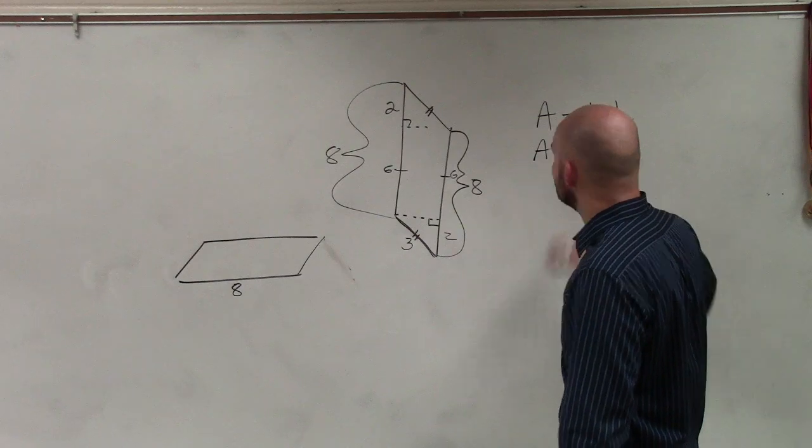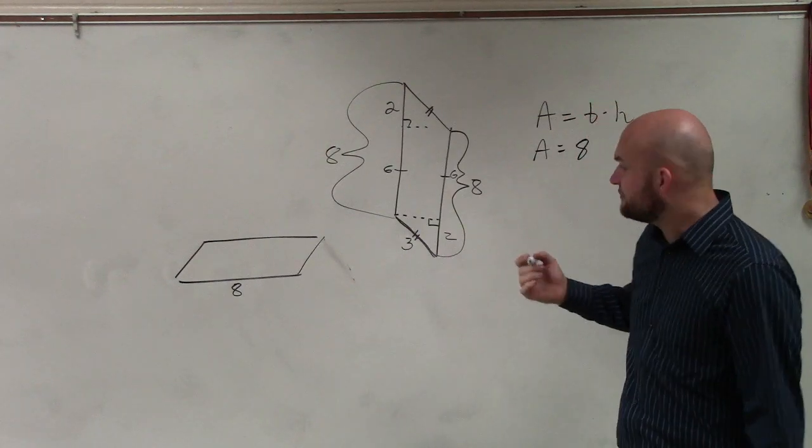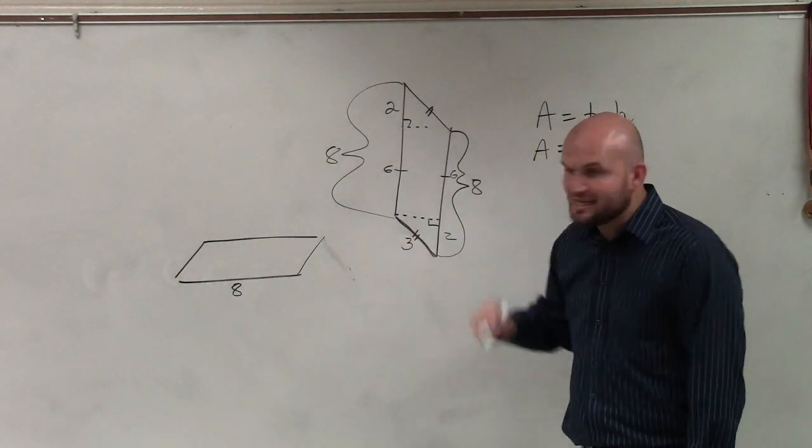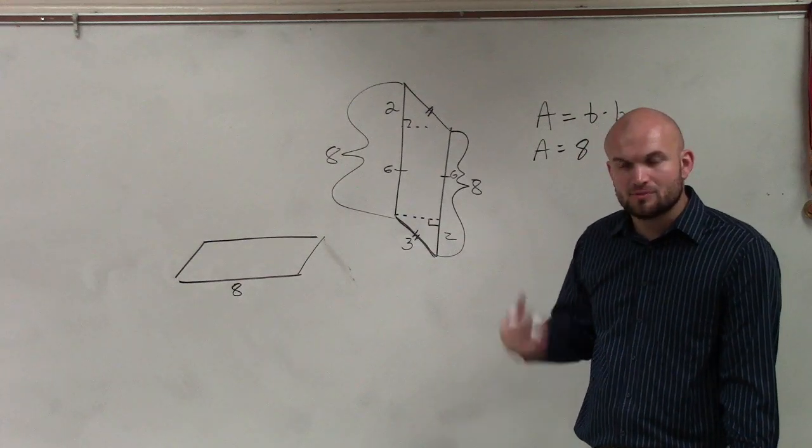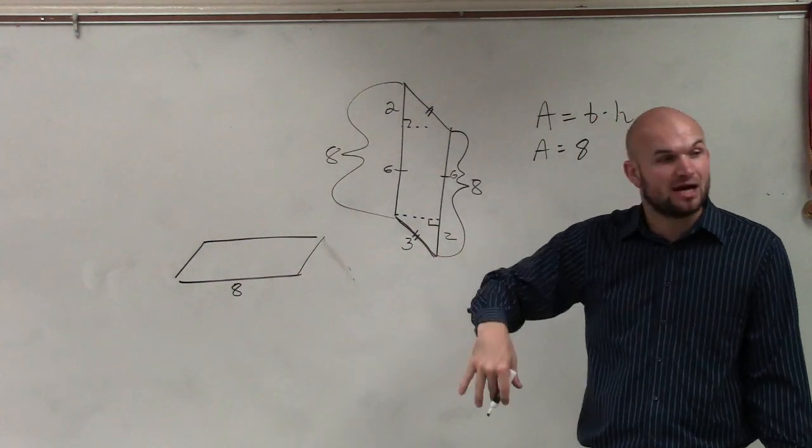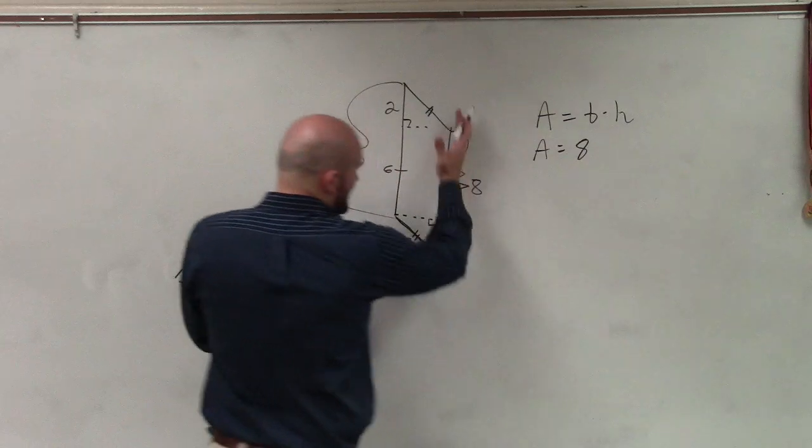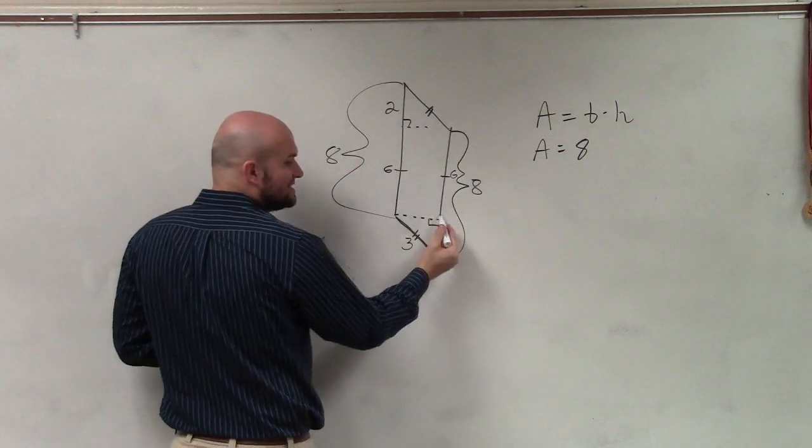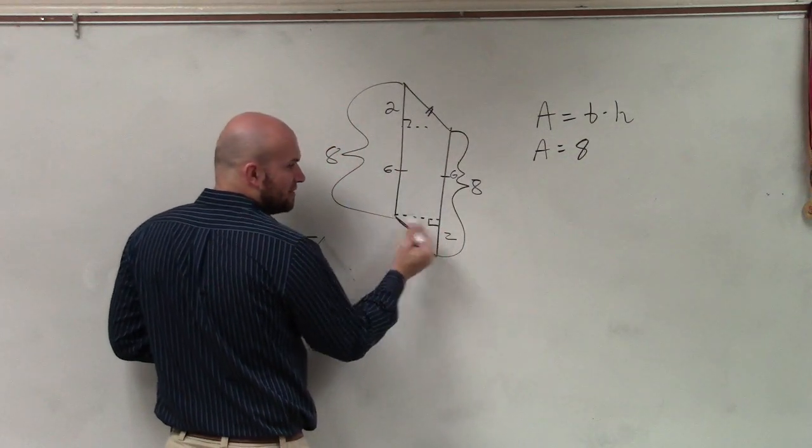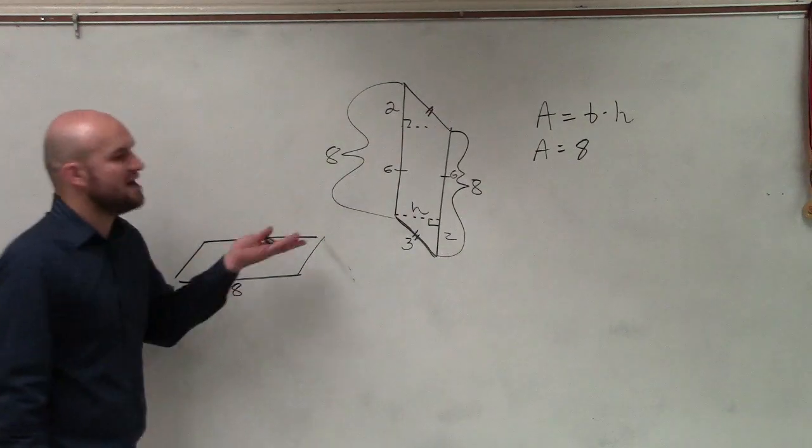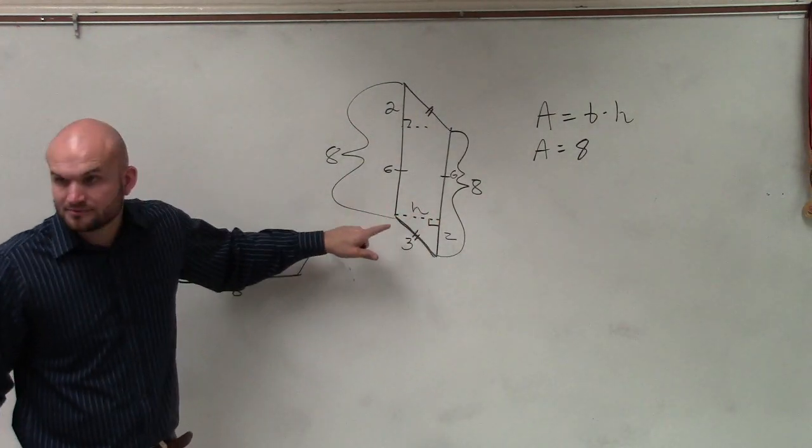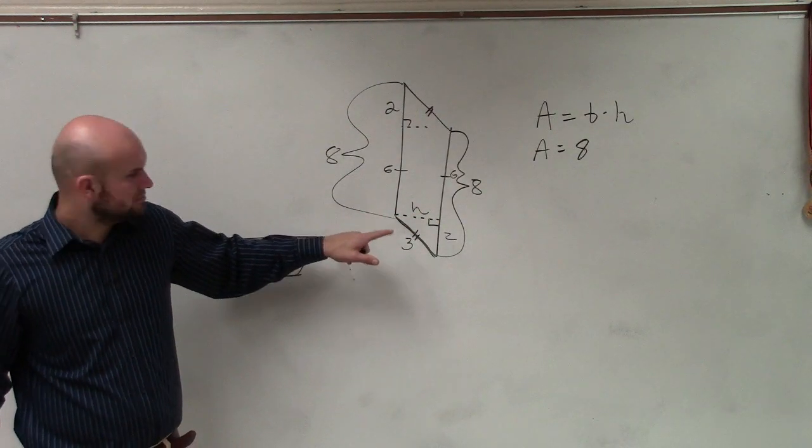So, area equals base times height, or eight. But now, I need to figure out, if that's my base, I need to figure out what the height is. So, if we're calling this the base, the height is going to be directly from here to here. Now, do we have that length from here to there? No.